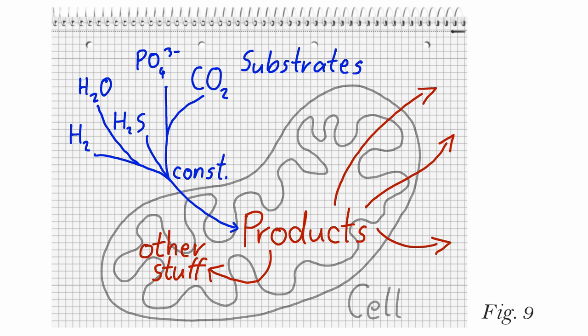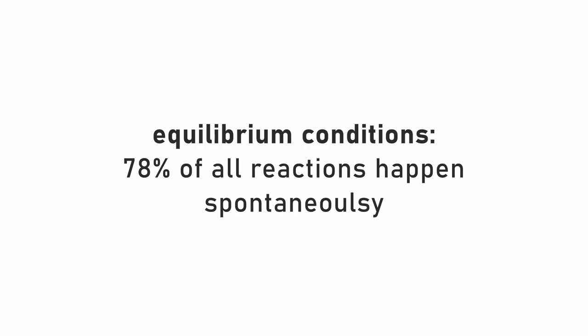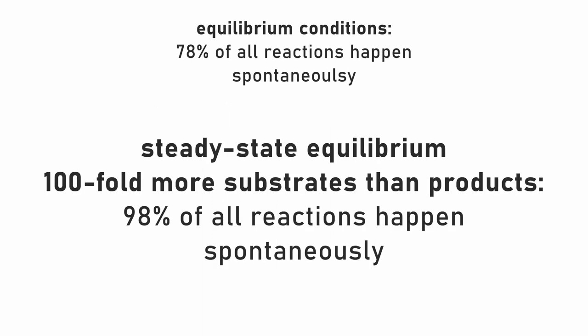The substrates, however, are provided in constant amounts. Under equilibrium conditions, 78% of the metabolic reactions are exergonic. But with 100-fold more substrate than product, 98% of them are exergonic.